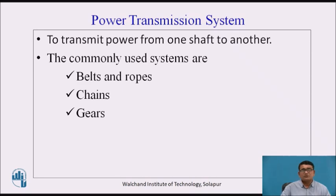When you have to select any type of power transmission system, you need to know what different media you can use. Three types are regularly used: belts and ropes, then chains, and gears. In the gears, different types of gears and gear trains are used.